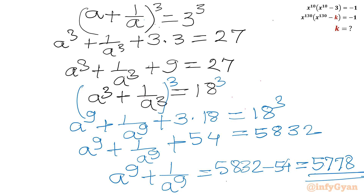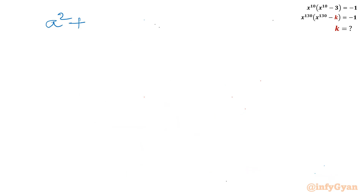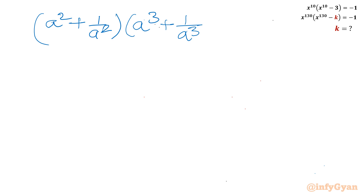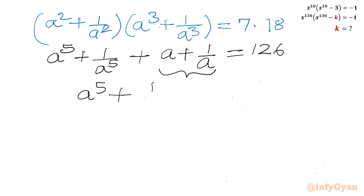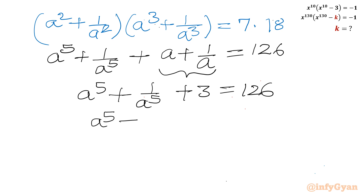Now the only remaining value is a^5 plus 1 over a^5. I will multiply (a^2 plus 1 over a^2) times (a^3 plus 1 over a^3), which is 7 times 18 equals 126. The cross product gives a plus 1 over a, which is 3. So a^5 plus 1 over a^5 plus 3 equal to 126, giving a^5 plus 1 over a^5 equal to 123.